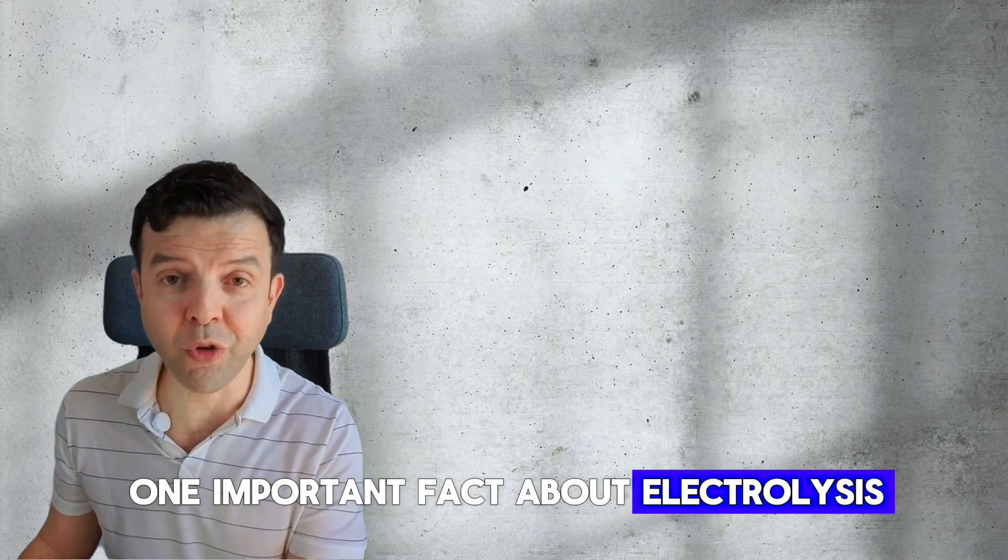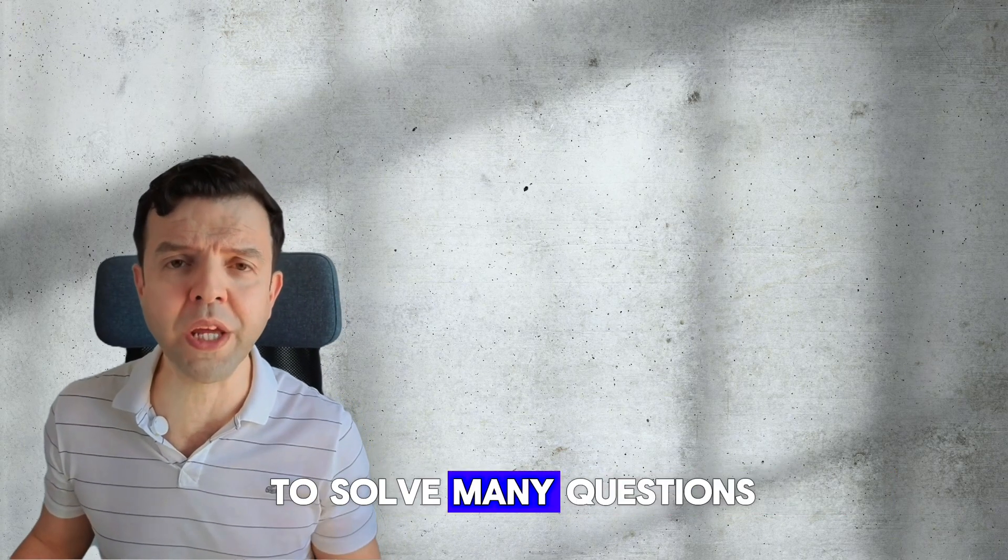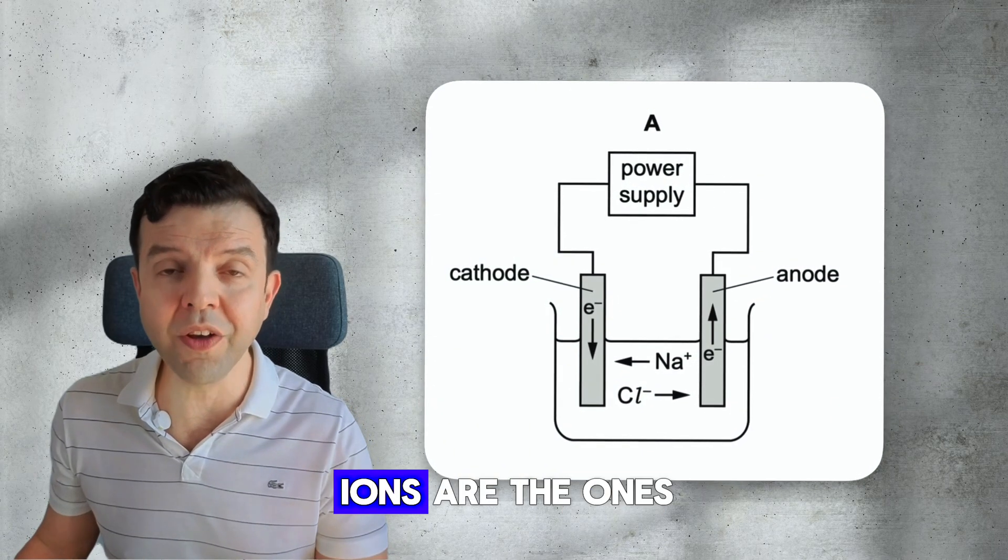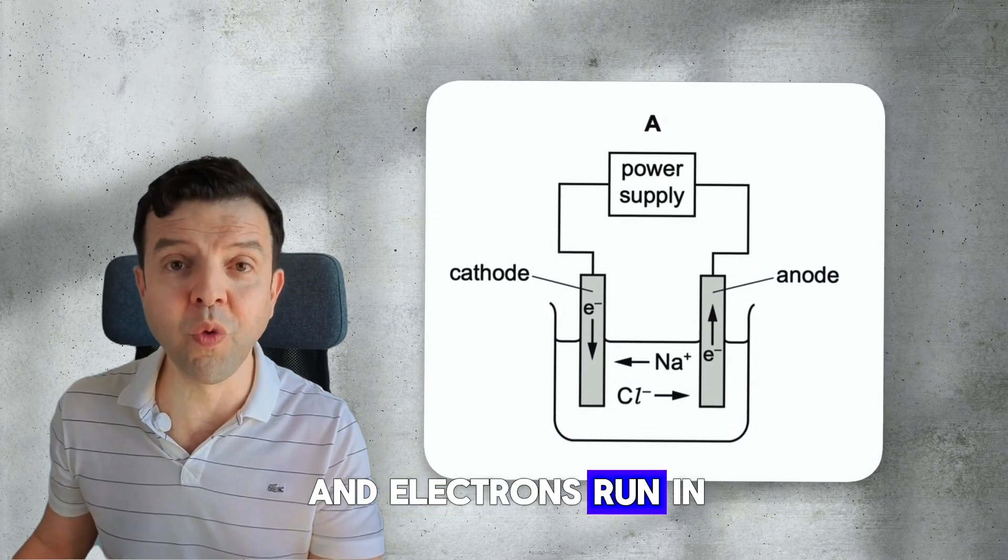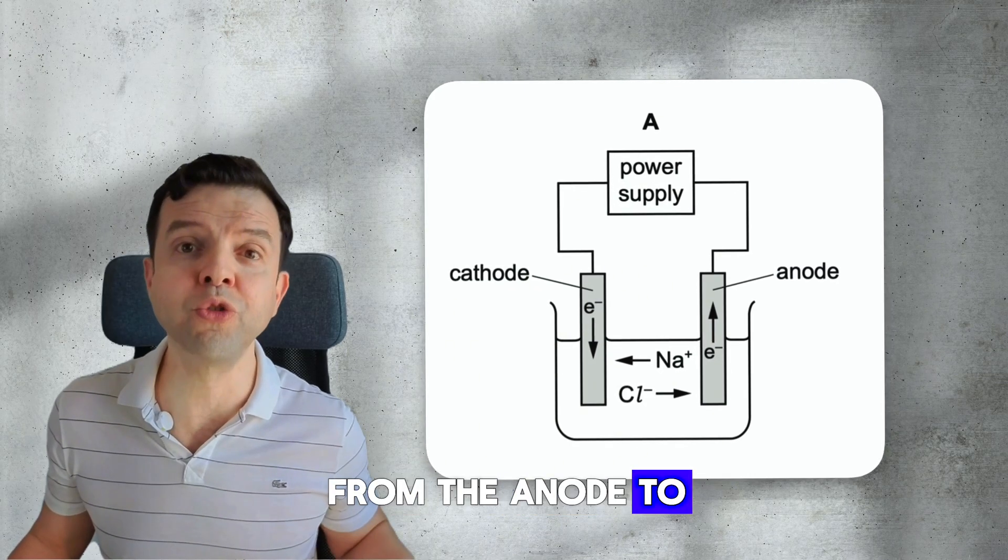One important fact about electrolysis that will help you solve many questions is the fact that ions are the ones that float in the solution and electrons run in the wires from the anode to the cathode.